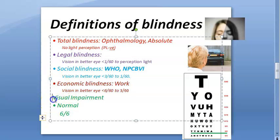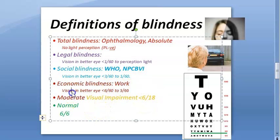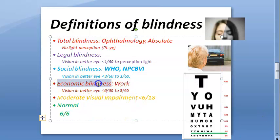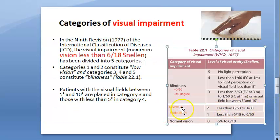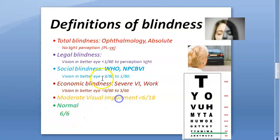Visual impairment from 6 by 18 to 6 by 60 is moderate visual impairment. Economic blindness — less than 6 by 60 to 3 by 60 — matches exactly with severe visual impairment. So economic blindness, work blindness, and severe visual impairment are all referring to the same range. These categories overlap and are essentially equivalent terminologies.